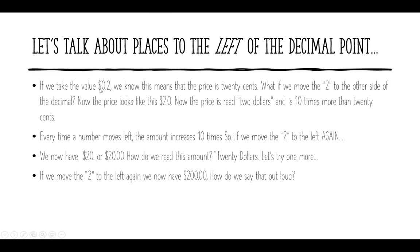If we take the value $0.20, we know that means the price is 20 cents. What if we move the two to the other side of the decimal? Now the price looks like $2.00 — it's read as 'two dollars,' and is 10 times more than the 20 cents it was before. Every time a number moves left, the amount increases 10 times. If we move the two to the left again, we now have 20 dollars, written as $20 or $20.00.